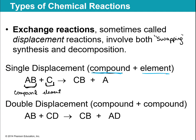The last is double displacement. You start with two pairs and they completely swap — A leaves B and joins D, C leaves D and joins B. The way you identify it is both reactants are compounds, and two compounds make two different compounds. So the arrow is the divider: more reactants = synthesis, more products = decomposition, same number with element and compound = single displacement, same number with both compounds = double displacement.